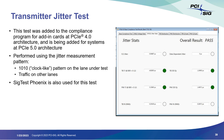The transmitter jitter test was introduced in PCIe 5.0. The pattern used is a clock pattern on the lane being tested, while on all other lanes there's traffic — not a 1010 pattern but an actual compliance data pattern.